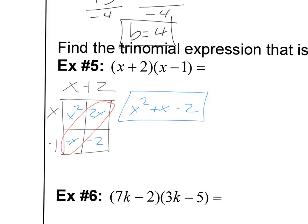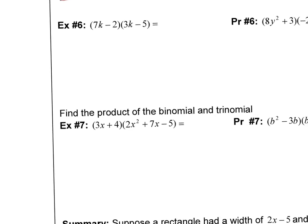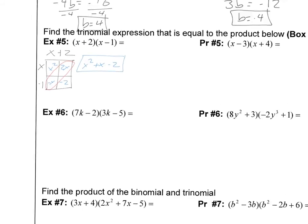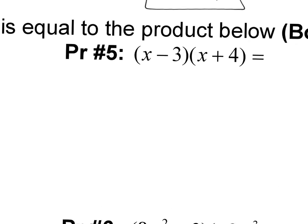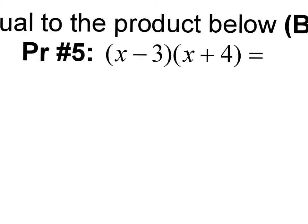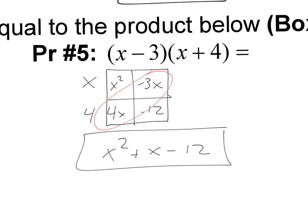The box method is a really nice way to multiply binomials, and you'll see when we get to trinomials it works fine for those as well. Go ahead and try practice number 5 on your own — draw a little box. You can draw the box right underneath and do X plus 4 there. Pause the video and come back when you're ready. Hopefully your box looks like mine and your final answer is X squared plus X minus 12.